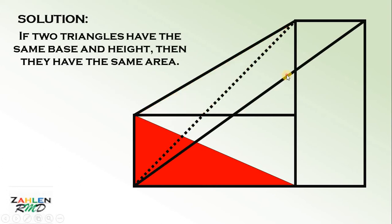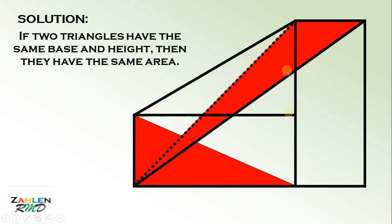Now let's have the other triangle. Notice that the area of this triangle is equal to the area of this right triangle. Now again, the reason is, they have the same base and they have the same height. Therefore, they have the same area.